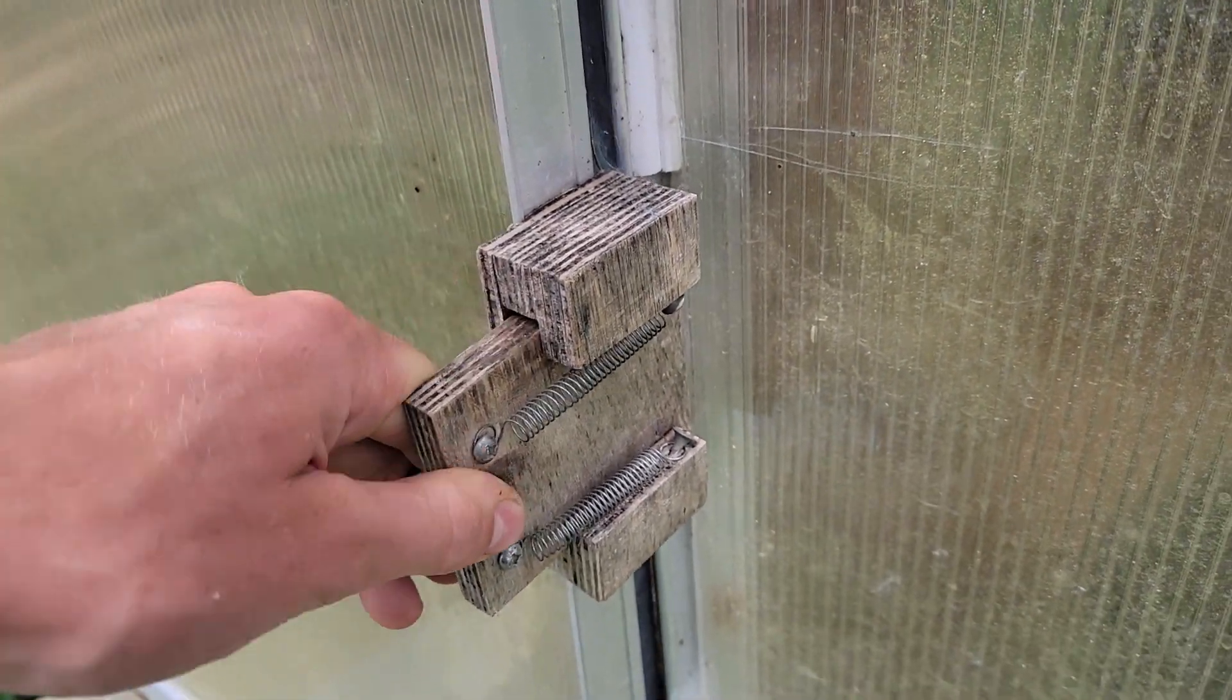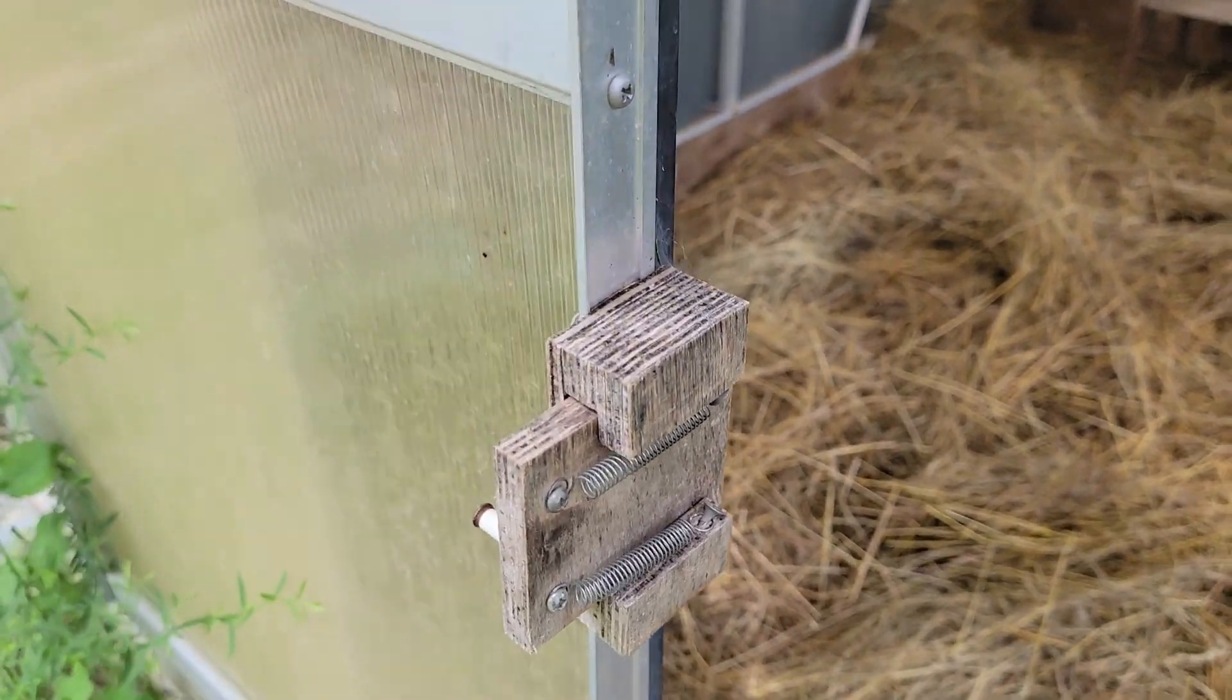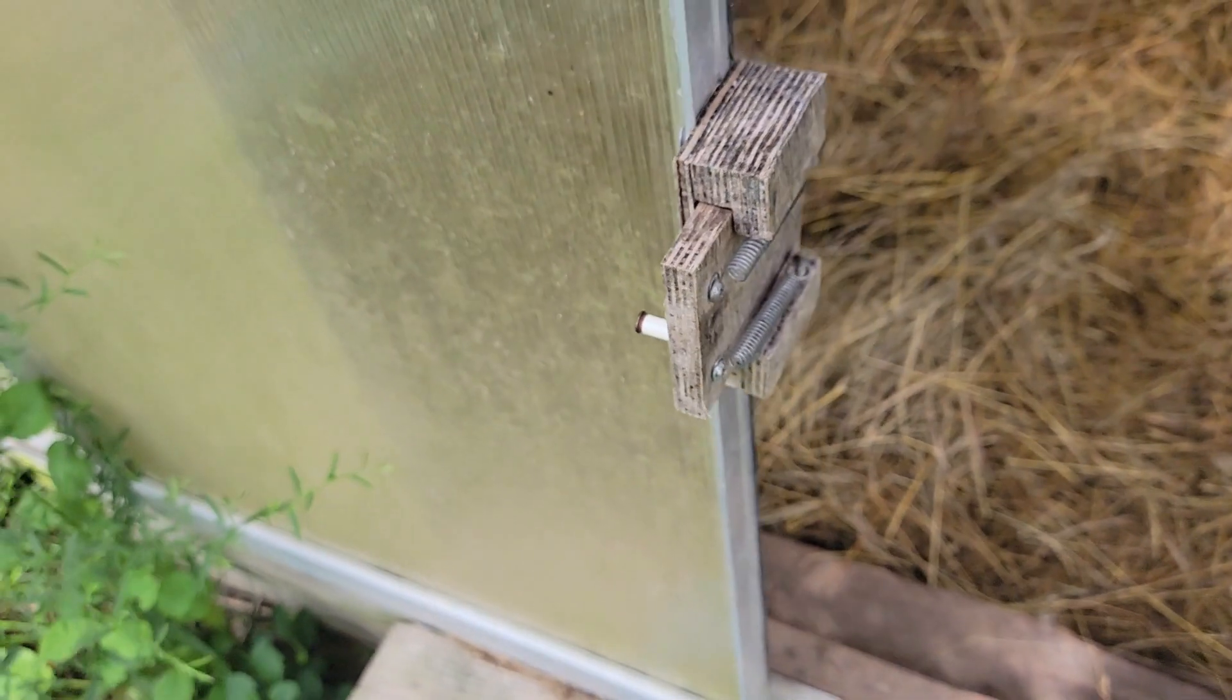I built this door latch for the duck coop which is kind of rotting now. It's made out of baltic birch plywood. I'm gonna make the same exact one out of plastic.